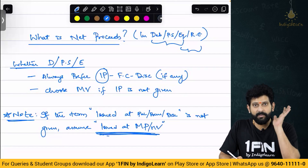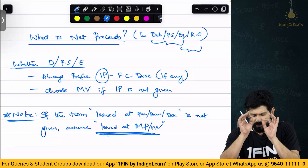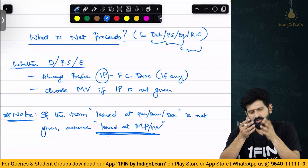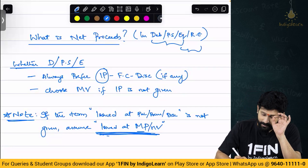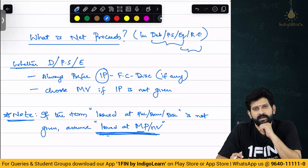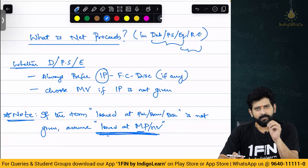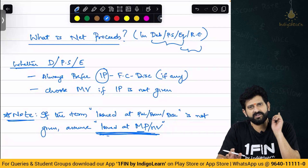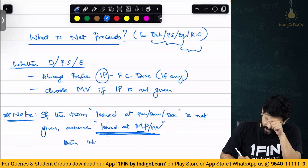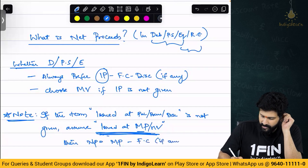If 'issued at par, premium, or discount' is not given, assume issued at market price. Meaning: issued at par, issued at premium, or issued at discount — those will be given as 110 or 112. If not given, assume issued at market price. So if it is assumed to be issued at market price and you have a flotation cost, then deduct minus flotation cost. He has not mentioned whether par, discount, or premium — nothing is mentioned. Flotation cost is given, issued at market price. Therefore, net proceeds equals market price minus flotation cost or discount, whatever applies.